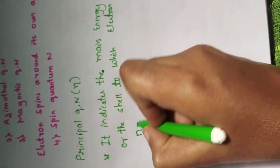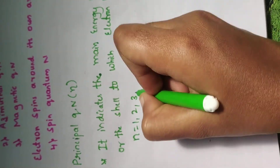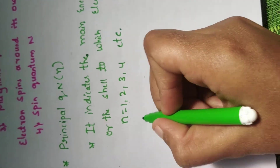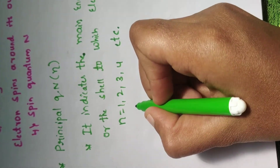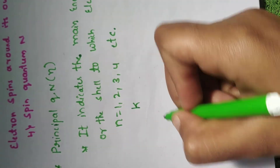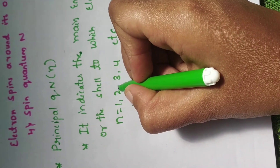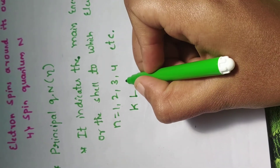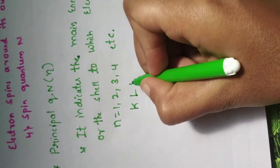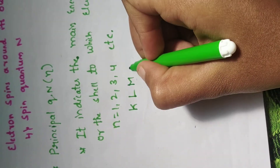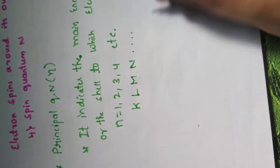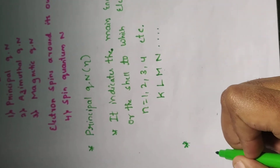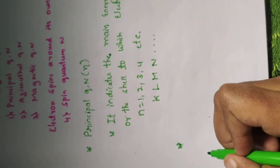n has values like 1, 2, 3, 4, and so on. When n equals 1 it is the K shell, when n equals 2 it is the L shell, when n equals 3 it is the M shell, when n equals 4 it is the N shell. It also determines the size and energy of the orbital.